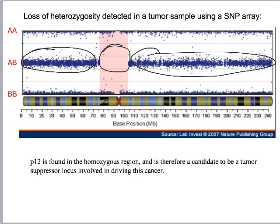This is useful because it tells us that the loss of heterozygosity unveiled some recessive trait that might have been beneficial for tumor growth. For example, in this case P12, a known tumor suppressor, was identified as such because losing heterozygosity revealed the recessive mutation, allowing it to be expressed and drive the cancer.